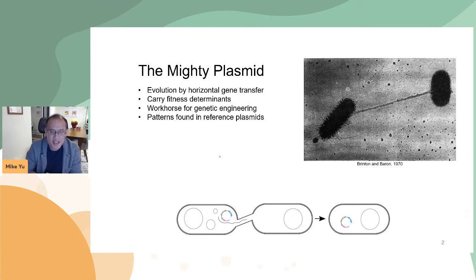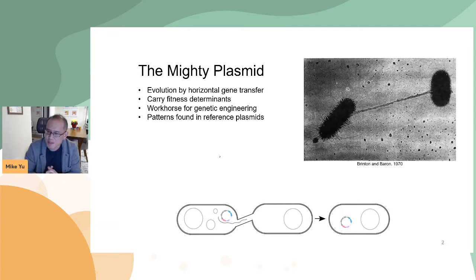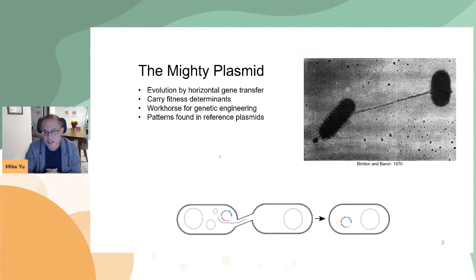In our work, we were interested in studying plasmids. As many of you know, plasmids are of fundamental importance in microbial evolution because they're a major mechanism of horizontal gene transfer. This is a famous picture of two bacterial cells transferring a plasmid by conjugation. At the bottom, there's a cartoon diagram of that same process. These plasmids are also important because they can carry fitness-determining genes like antibiotic resistance or other functions that allow their host microbes to adapt to rapidly changing or stressful environments. And because of their malleability, plasmids have also been used widely as a workhorse in genetic engineering.